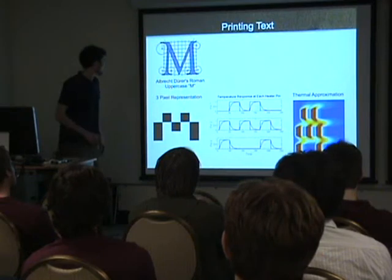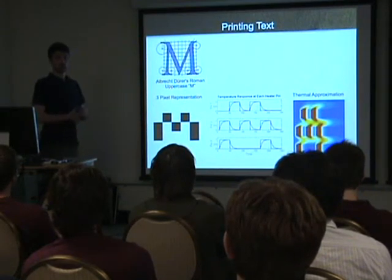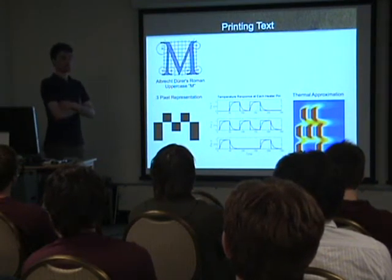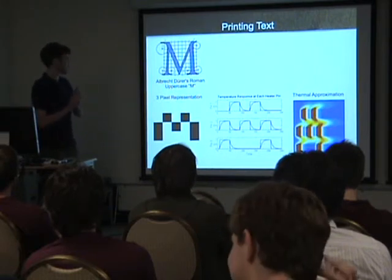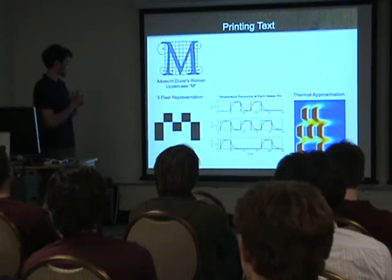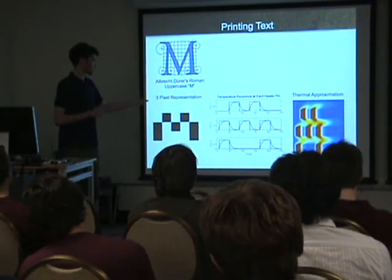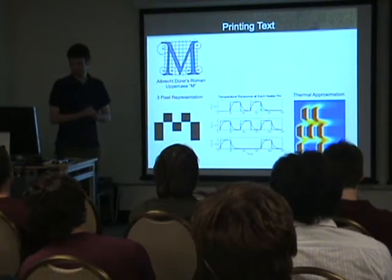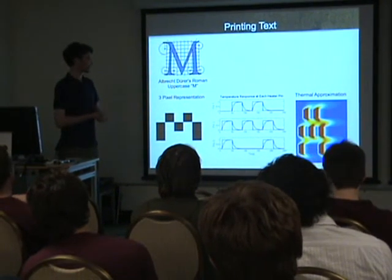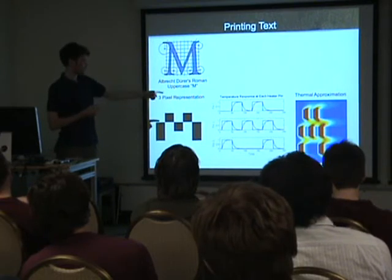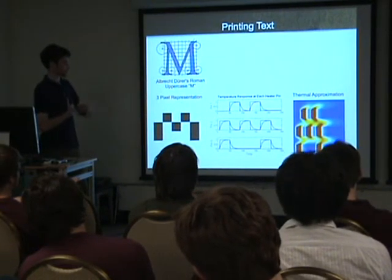To create an M, we start with Albrecht Dürer's nice Roman uppercase M, and then we have our representation, which is three pixels of spaciness. We're looking at our M and then we have some signals that we're translating into heater temperature changes, and my thermal approximation of what's happening in the surfaces around it.